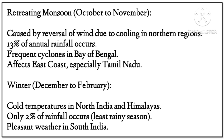The retreating monsoon (October to November) is caused by the reversal of winds due to cooling in northern regions, contributing 13% of annual rainfall. Frequent cyclones in the Bay of Bengal affect the east coast, especially Tamil Nadu.